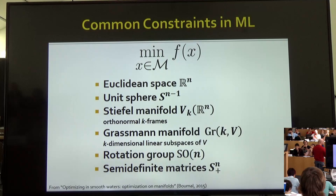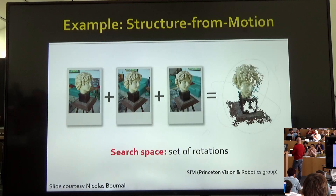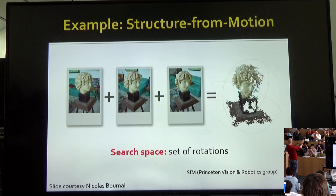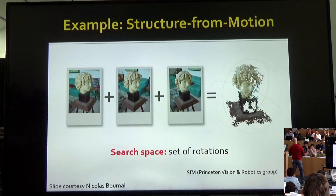In structure from motion in computer vision, the task is to take many different views of a 3D scene and register them. You have different rotations of a 3D model and you're trying to synchronize them. Between every two views you have a camera motion estimate, but they may not be consistent — going from pose A to pose B to pose C and back to pose A may not give the identity matrix. So you want to take all these erroneous measurements of relative motion and form one coherent view.